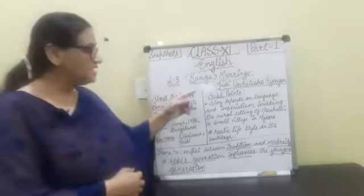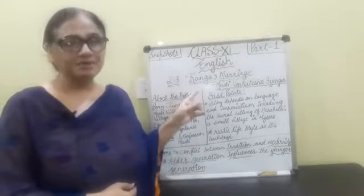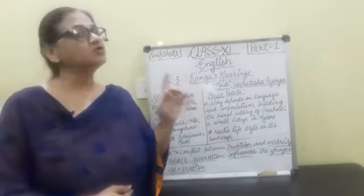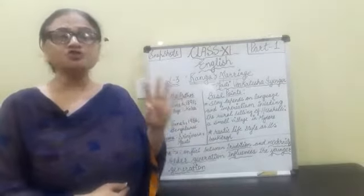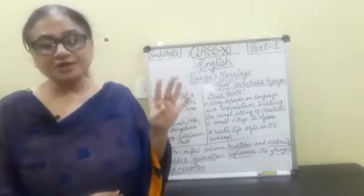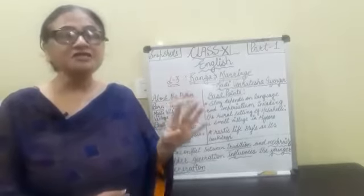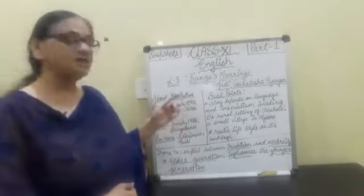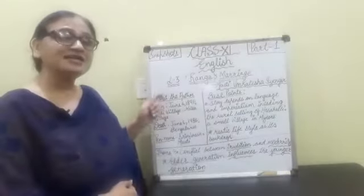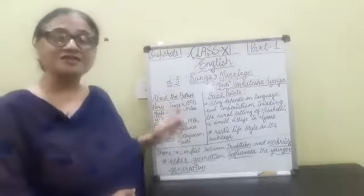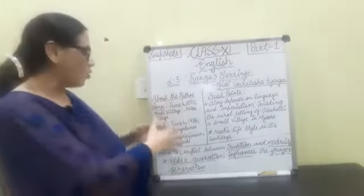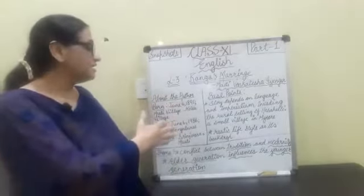Masti Venkatesha — 'Masti' was his village name, and he used to keep that name with himself. As his village was popular, so was he. He received, almost four times, the greatest award called the Jnanpith Award for his literary work. He was born on June 6th, 1891, in Masti village, which is in Kolar district, near Karnataka. Surprisingly, his death date was also his birth date — he died on June 6th, 1986, in Bengaluru.